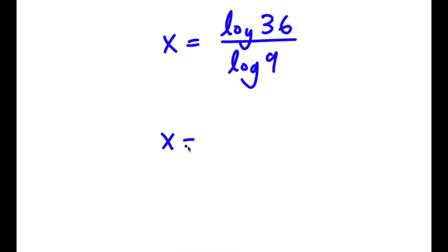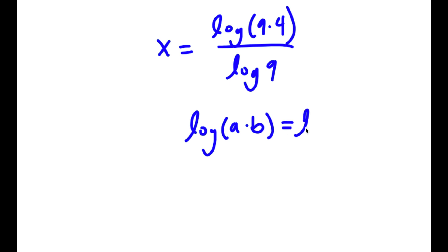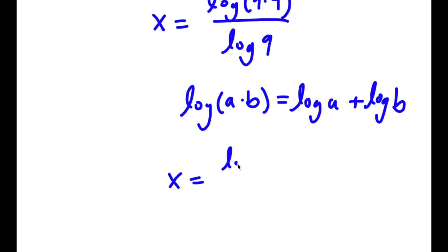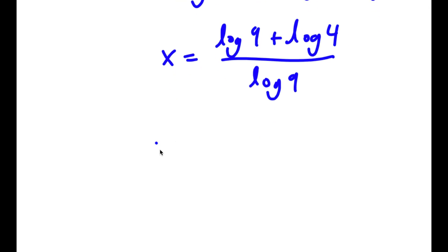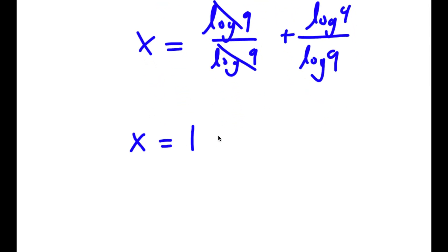Log 36 is the same thing as log of 9 times 4, so I have log(9 × 4) over log 9. If I have something in the form log(a times b), this equals log a plus log b. So log(9 × 4) equals log 9 plus log 4. This gives me log 9 over log 9 plus log 4 over log 9. The log 9 over log 9 cancels, so x equals 1 plus log 4 over log 9.